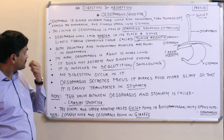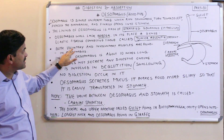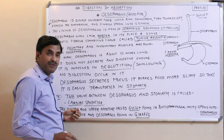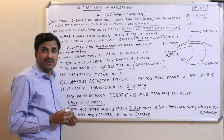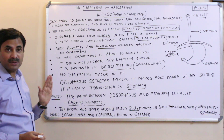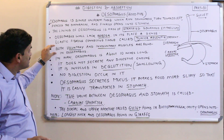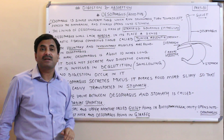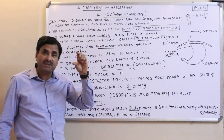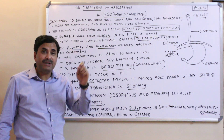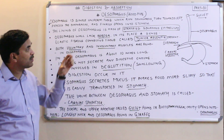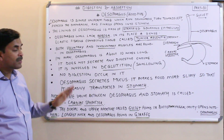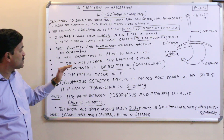The esophagus consists of both voluntary (striated) and involuntary (non-striated) muscles. Some parts of the esophagus contain voluntary muscles, while other parts consist of involuntary muscles.